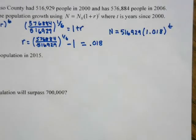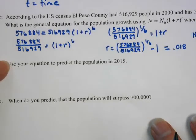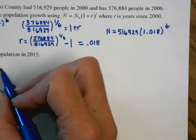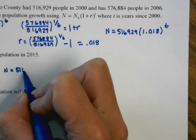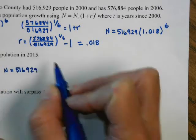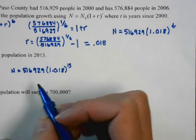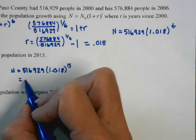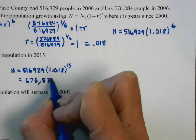We'll now use that equation for follow-up problems. The next one says to predict the population in 2015, so we plug in t = 15. Rounding to the nearest whole number, we get approximately 675,534.